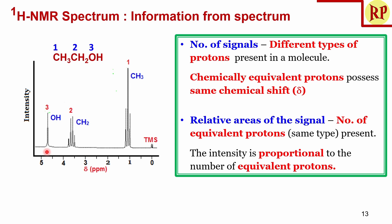The number of signals tells us how many different types of protons are present. For ethanol, we count 3 signals, so there are 3 different types of protons. Chemically equivalent protons possess the same chemical shift — for example, all 3 methyl protons have the same chemical shift. Therefore, we can identify 3 types of protons in ethanol.